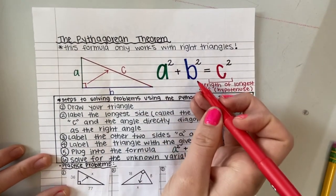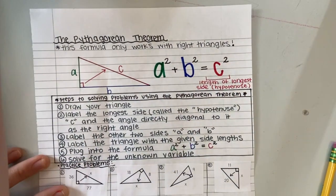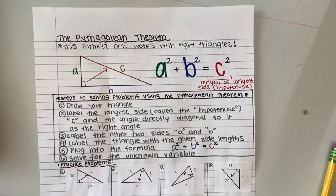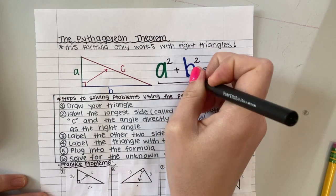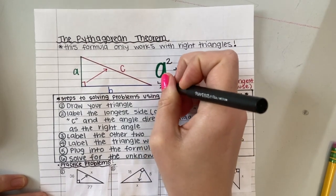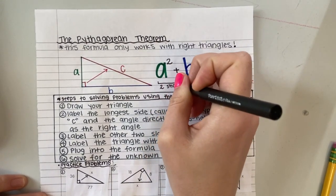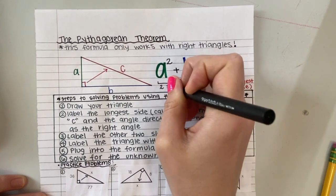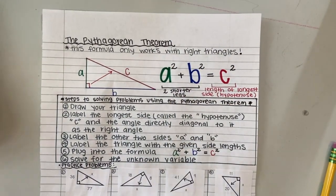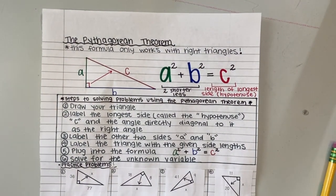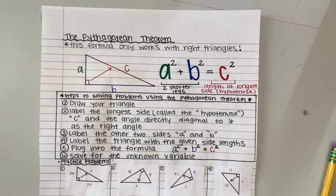A and B are just our legs. It doesn't matter which one you label as which, as long as these are just the two shorter legs. So let's look at some example problems to help us understand what the Pythagorean Theorem tells us.